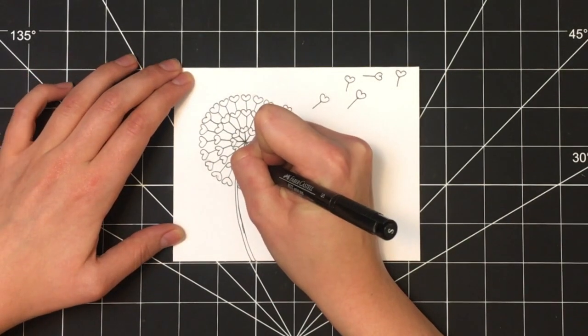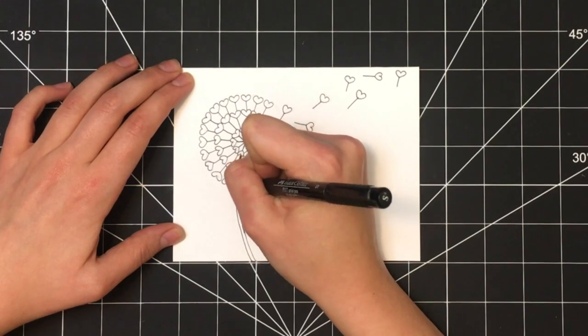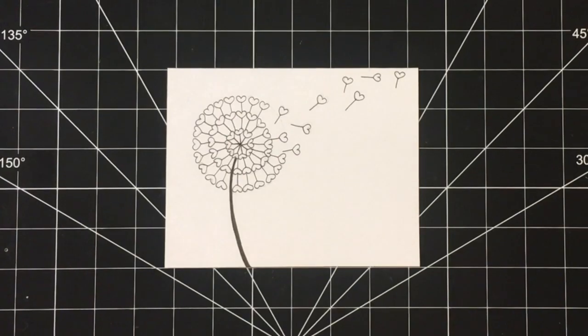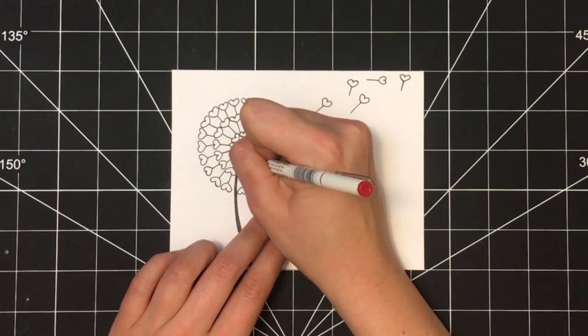Once you have everything outlined, fill in the stem solid black. Once the stem is colored in, you're all done with that pen and can put it to the side.